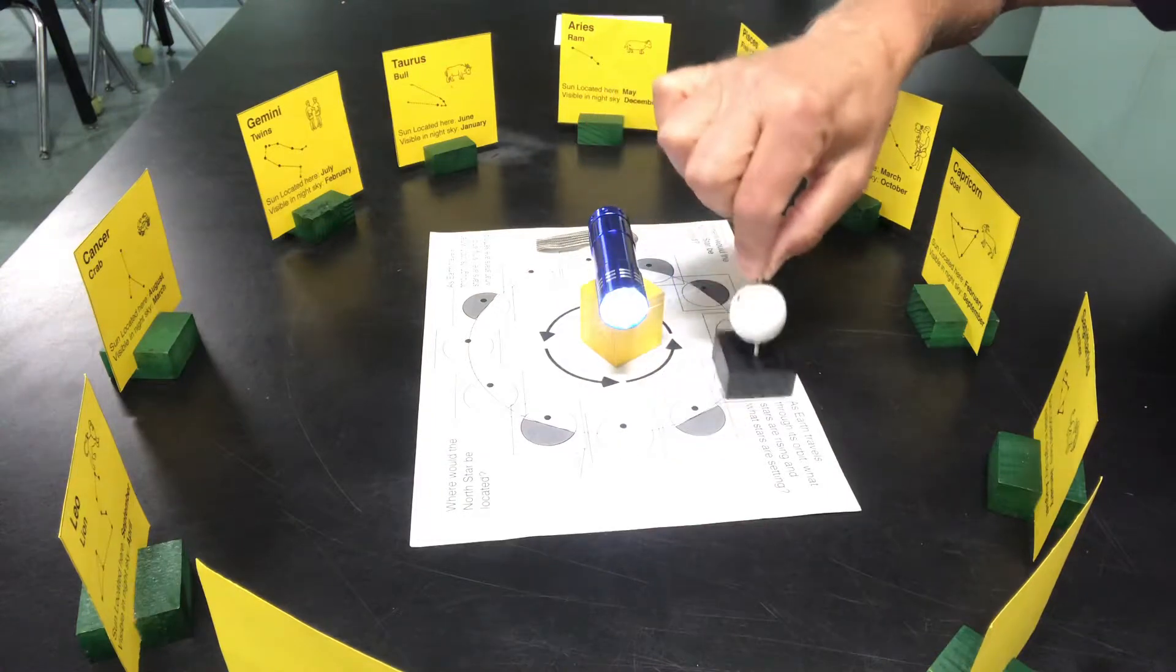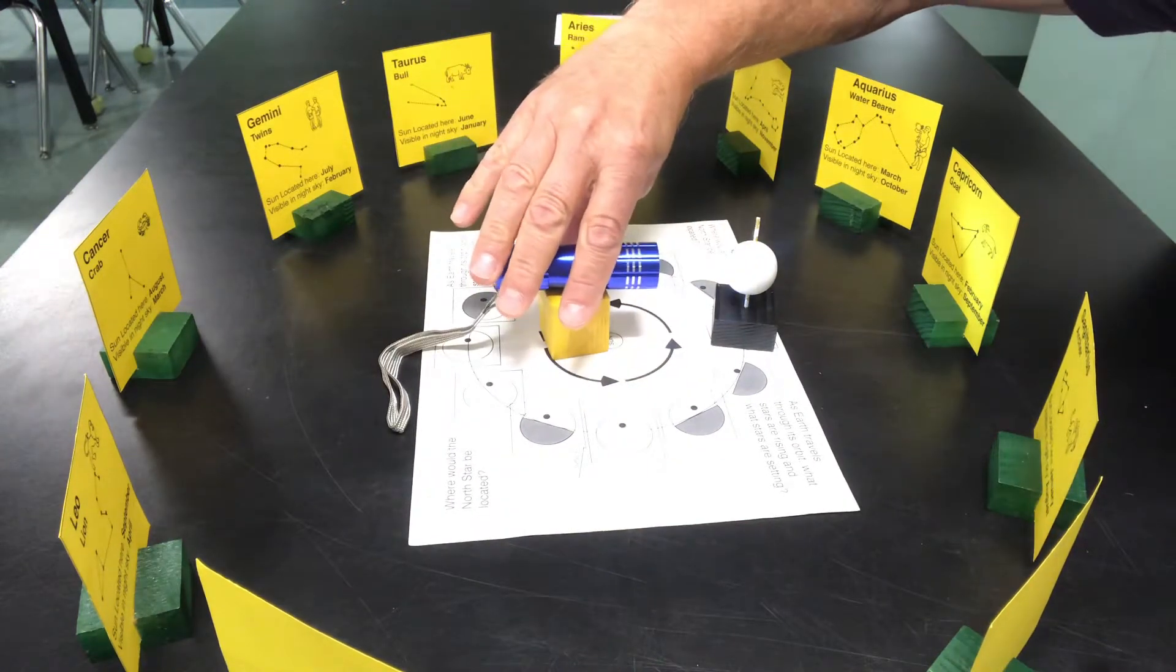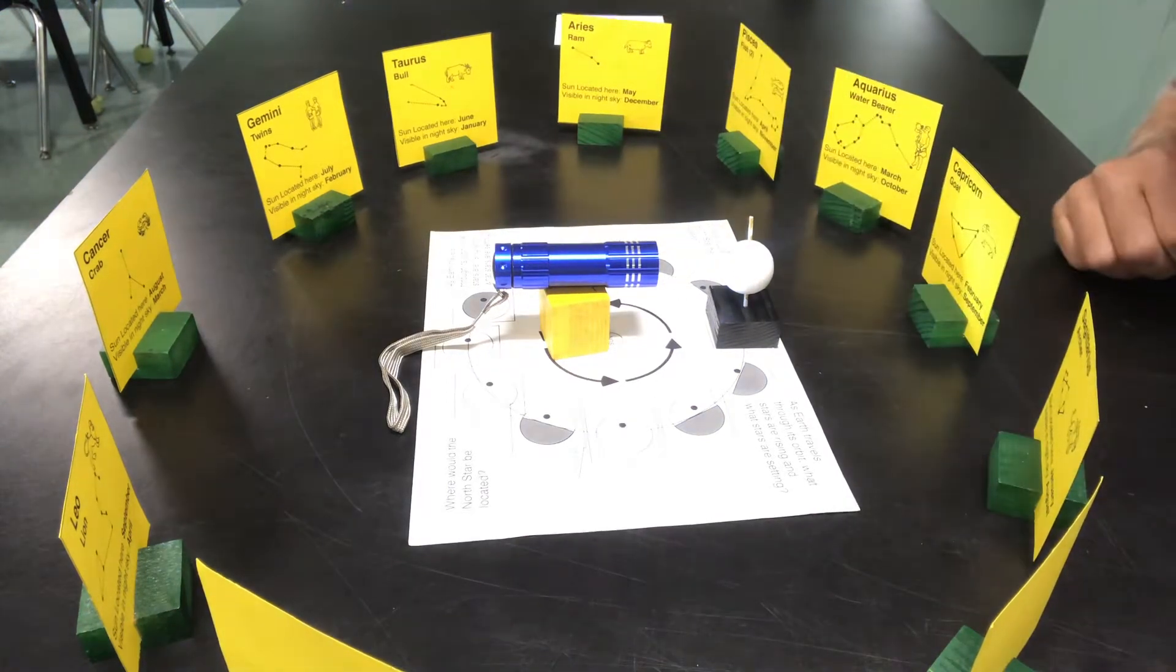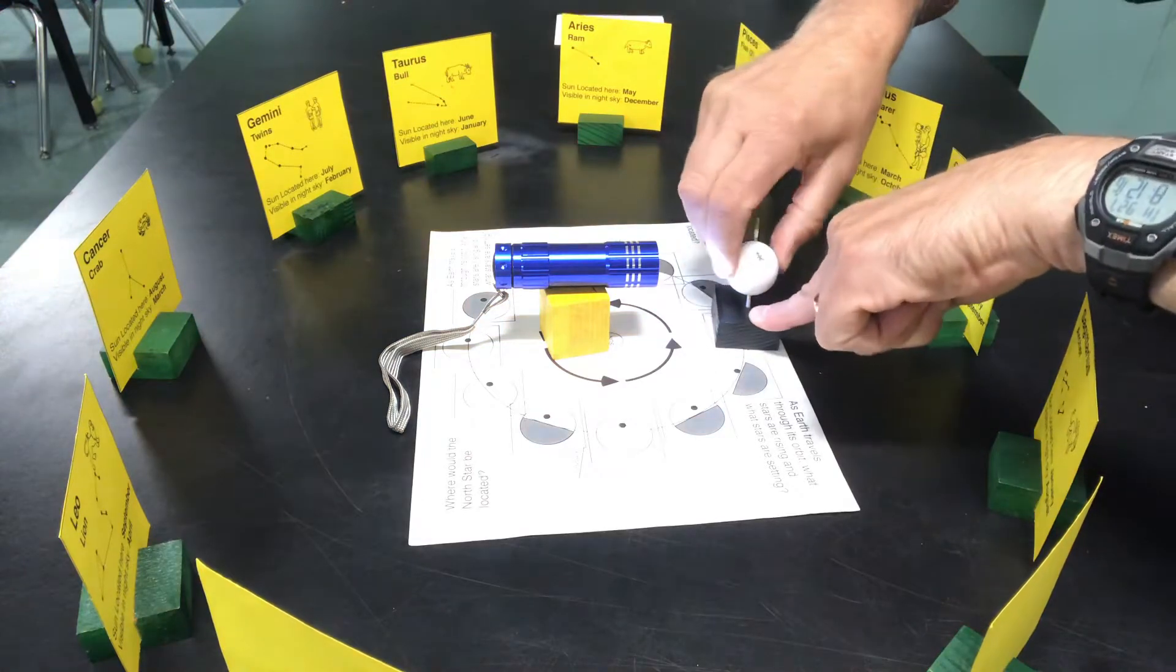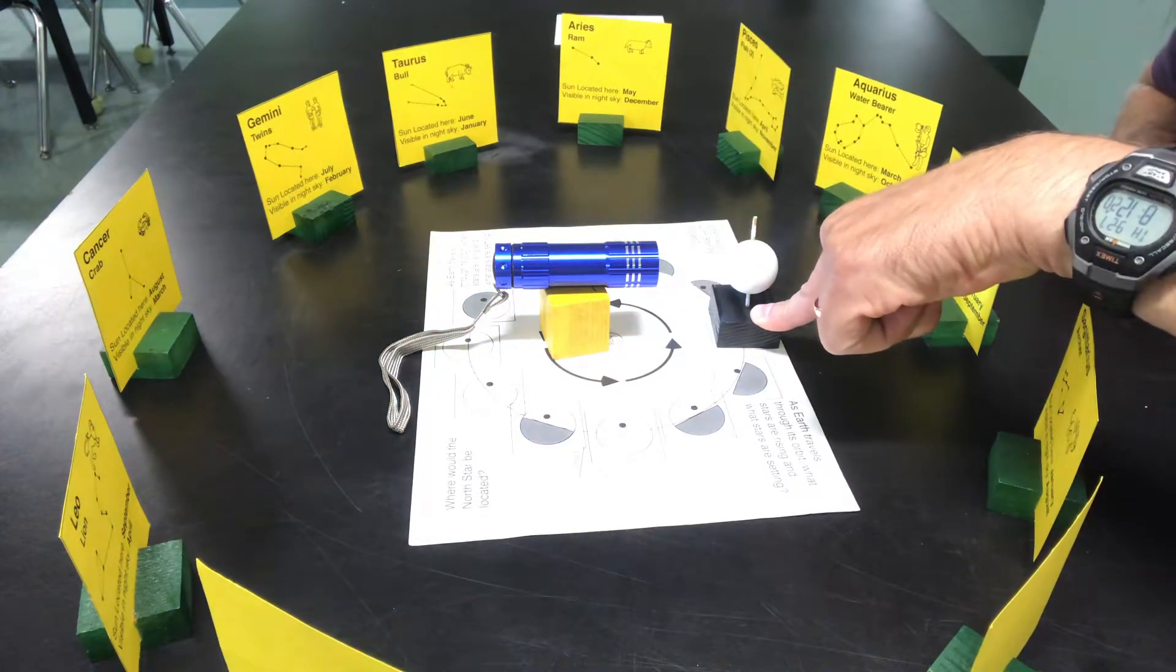So in this model, we can look at a number of different things. We can see that during different seasons of the year, we're going to see different constellations. We're going to see that the rotation of the Earth causes constellations to rise and set.